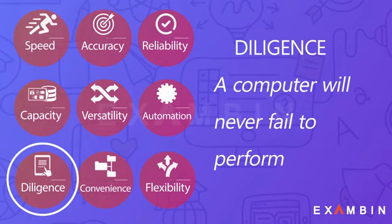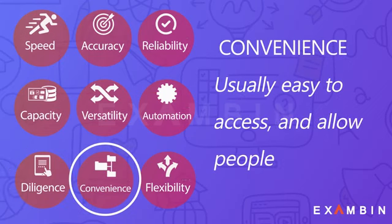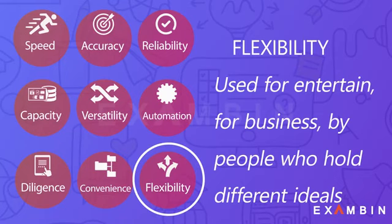Number seven — Diligence: a computer will never fail to perform its task due to distraction or laziness. Number eight — Convenience: computers are usually easy to access and allow people to find information easily. Number nine — Flexibility: computers can be used for entertainment, business, education, and a lot of other things; people with different needs can use them for different scenarios.